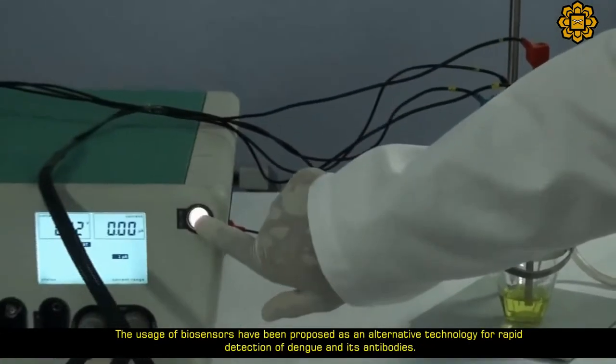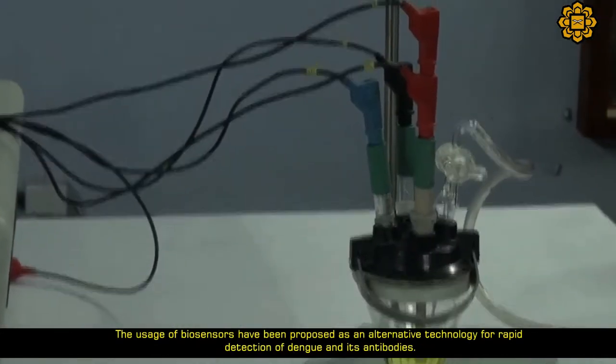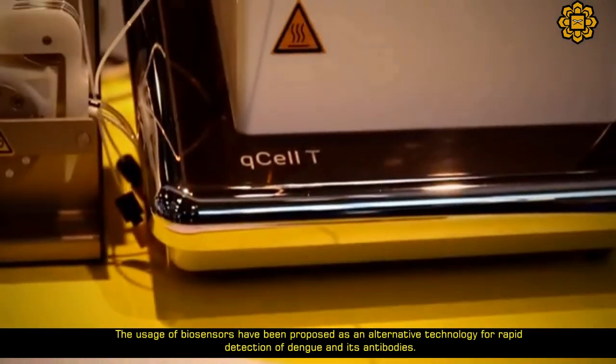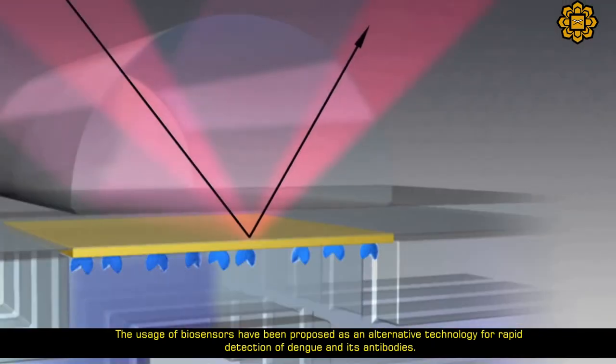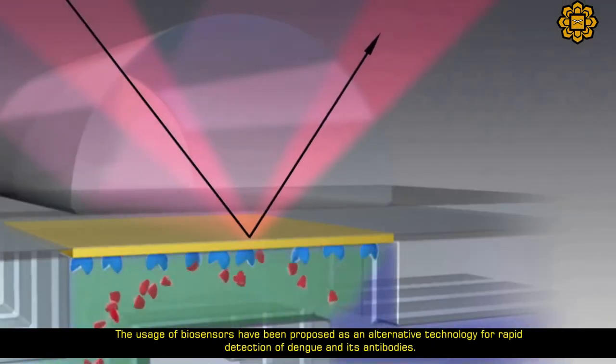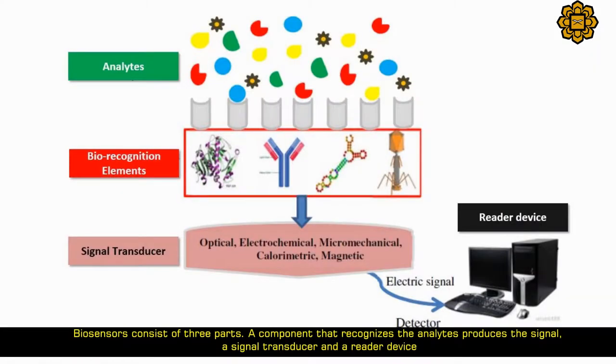The usage of biosensors has been proposed as an alternative technology for rapid detection of dengue and its antibodies. Biosensors consist of three parts: a component that recognizes the analyte and produces a signal, a signal transducer, and a reader device.